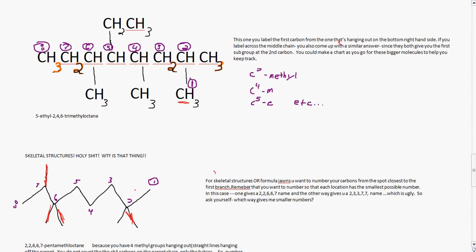So moving on, next. This one you can label from the first carbon from the one that's hanging on the bottom right side. If you label across the middle chain you'll also come up with a similar answer since they both give you the first subgroup at the second carbon. And you can make a chart as you go for these bigger molecules to help you keep track. So if you label from here as your 1, you'd have 1, 2, 3, 4, 5, 6, 7, 8. So on your 2 right here, hanging on carbon 2, you would have C2-methyl. On C4 you have a methyl. On C5 you have an ethyl, etc. So you can make a little chart here like that, like I do just to keep track and then name it. So this would be 5-ethyl and then 2, 4, 6-trimethyloctane. Because on 2, 4, and 6 you have methyl groups. So again, reading that backwards, octane, you have 8 carbons. Trimethyl, you have 3 methyl groups that are attached to number 2, 4, and 6 carbons. Then you have an ethyl group attached to the 5th carbon.